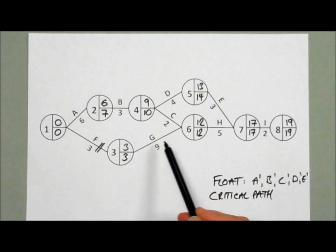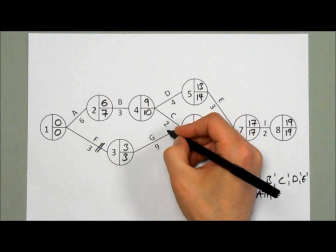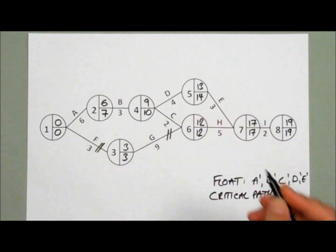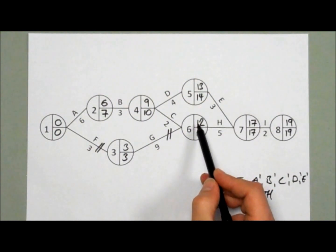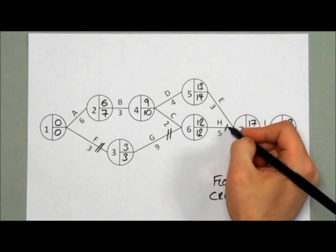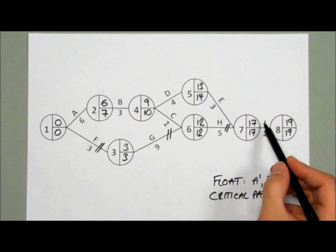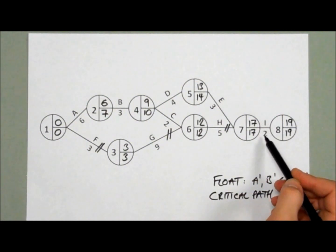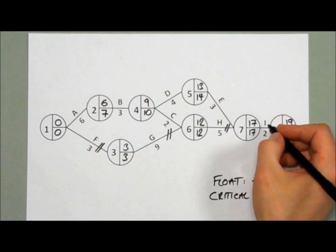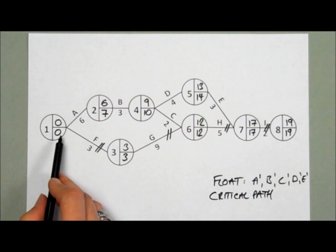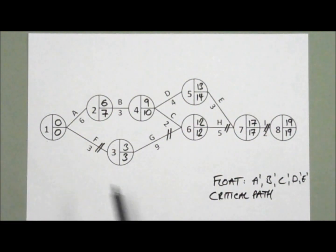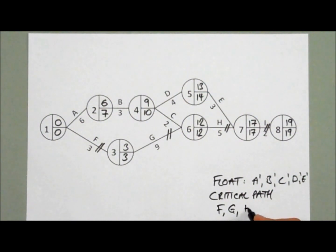12 minus 9 is 3, minus 3 is 0 - G is also critical. Activity H: 17 minus 5 is 12, minus 12 is 0 - it is critical. And our final task, task I: 19 minus 2 is 17, minus 17 is 0. So our critical path - the route from node 1 - is F, G, H, and I.